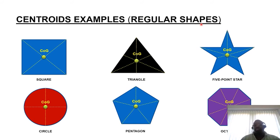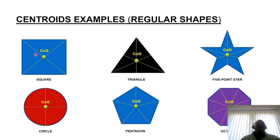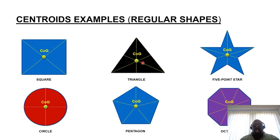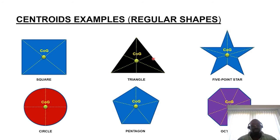In terms of examples of centroids for regular shapes, I've provided these examples here. For regular forms like squares, circles, triangles, polygons — such as a pentagon, octagon, or five-pointed star — just drawing two diagonals from their respective corners, or in the case of a circle tracing diameters from different points along its circumference, where they intersect gives you the centroid position. For regular forms, it's very easy to work out the centroid position — simply define a reference point and measure the distance of the centroid to it to identify the coordinates.